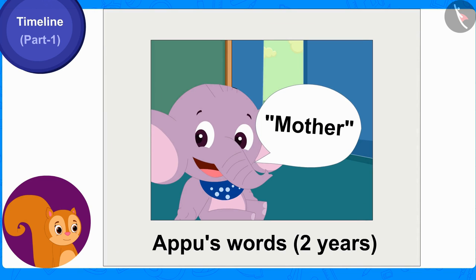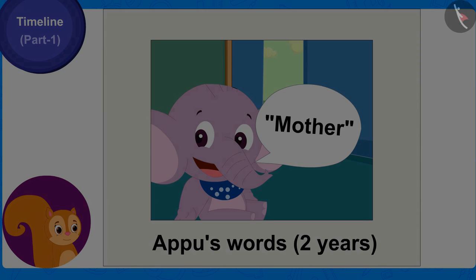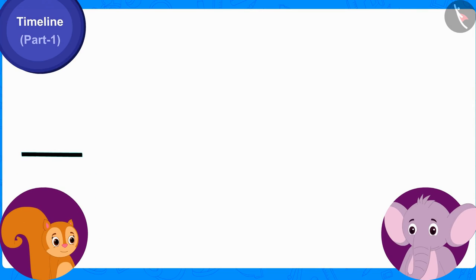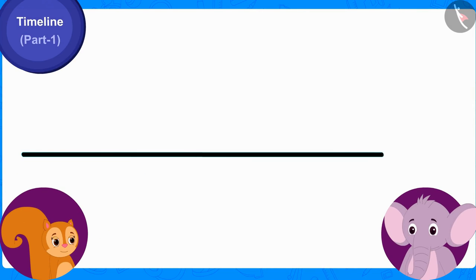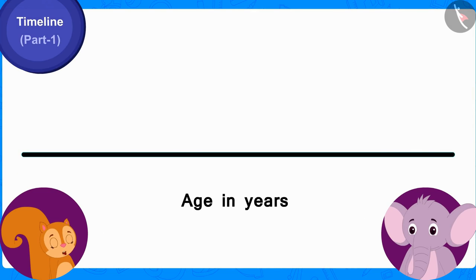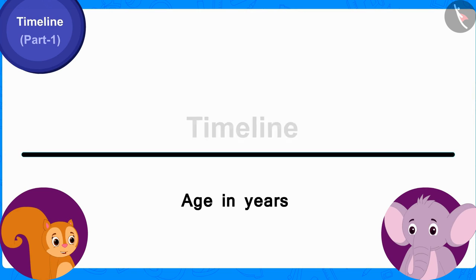The last picture was taken when Appu first started speaking the word 'mother' at the age of two. Chanda drew a horizontal line and explained to Appu: to make the timeline, we have to first draw a horizontal line like this.